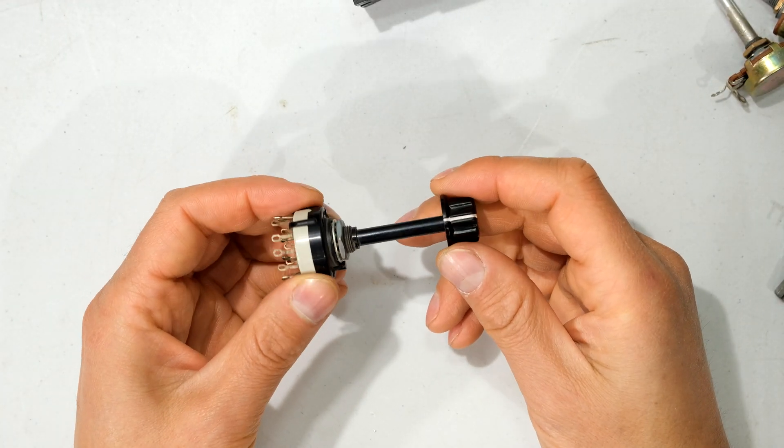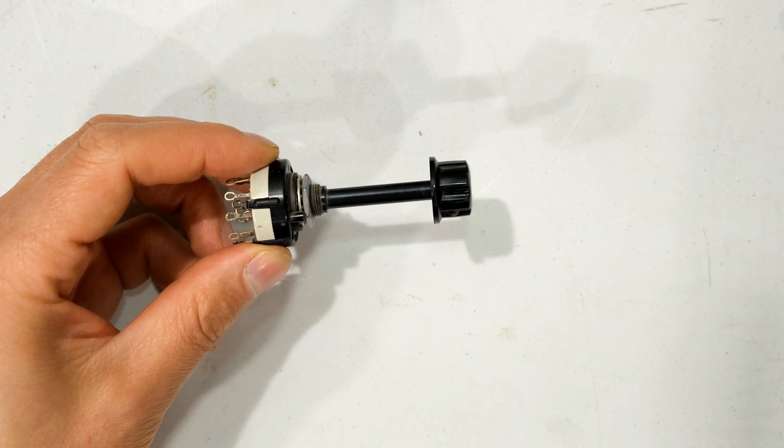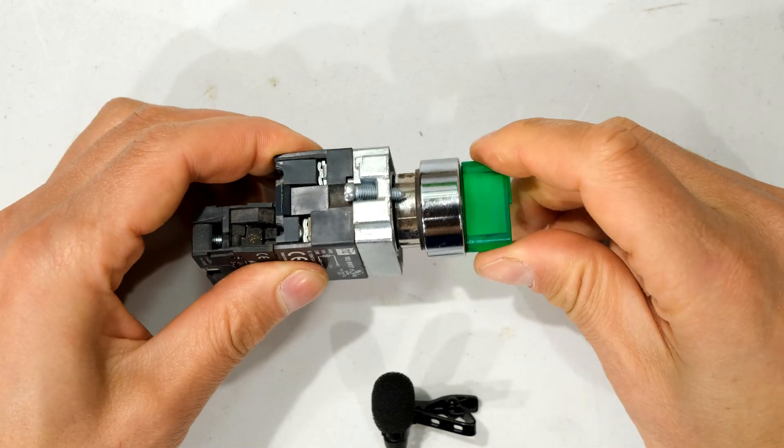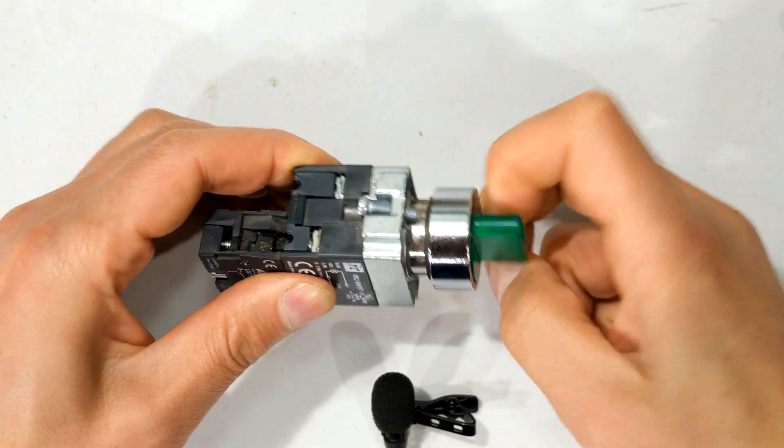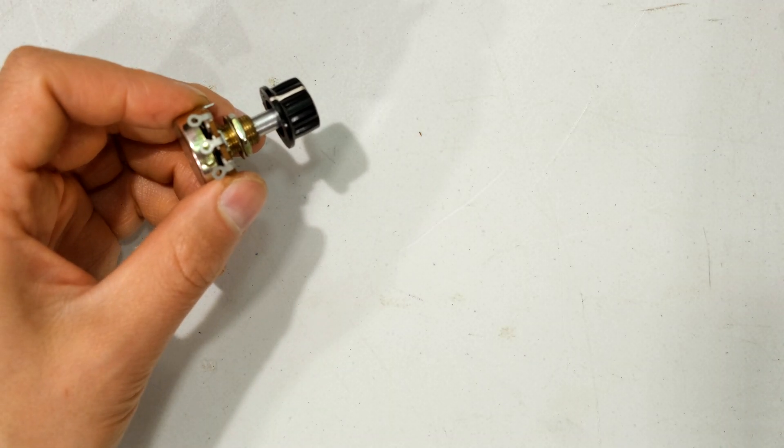Also, rotary switches often make a distinct click sound. For example, listen to the rotary switch clicking sound. While a variable resistor does not make such a sound.